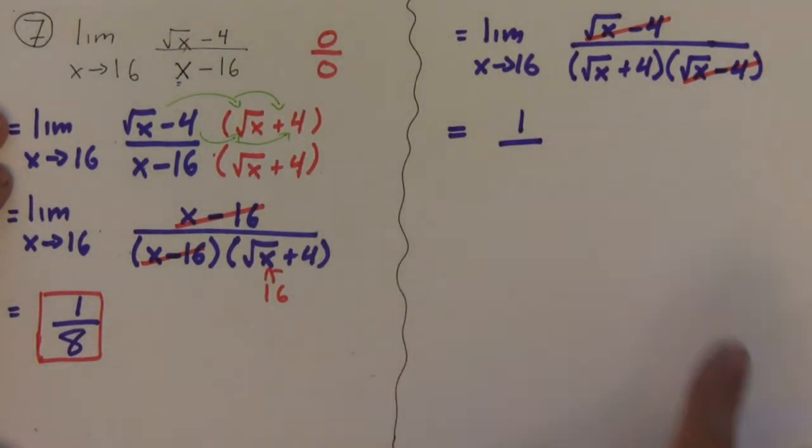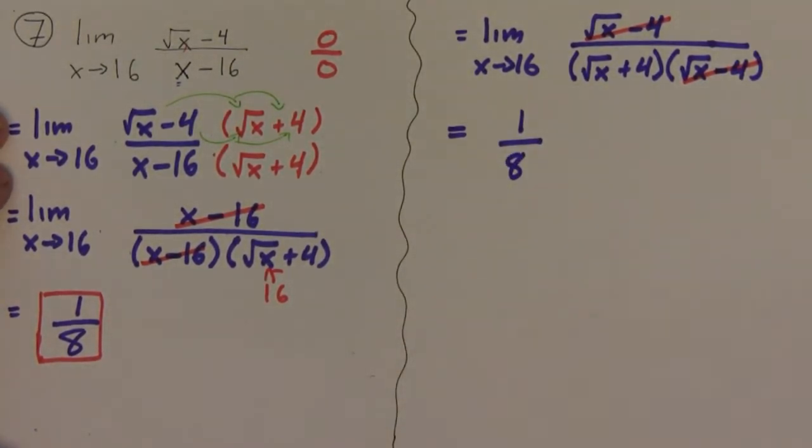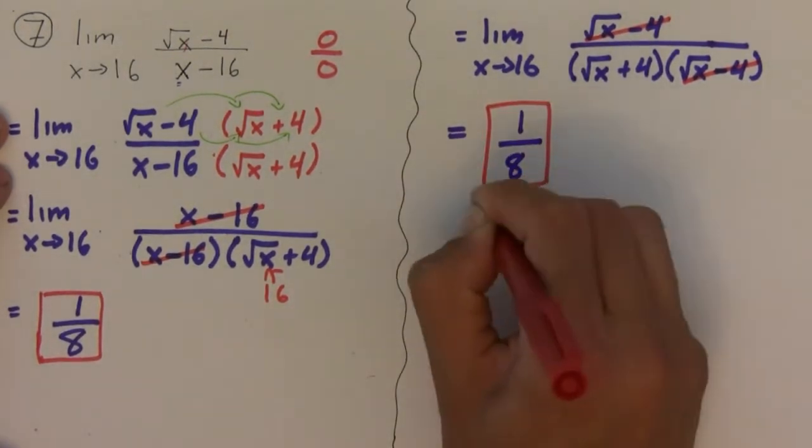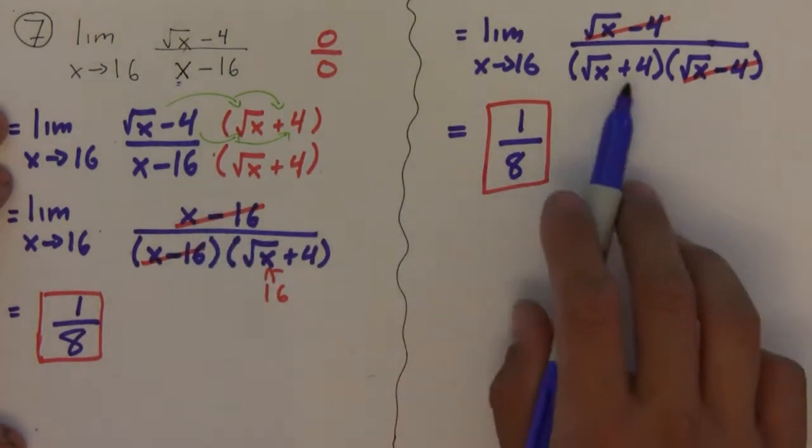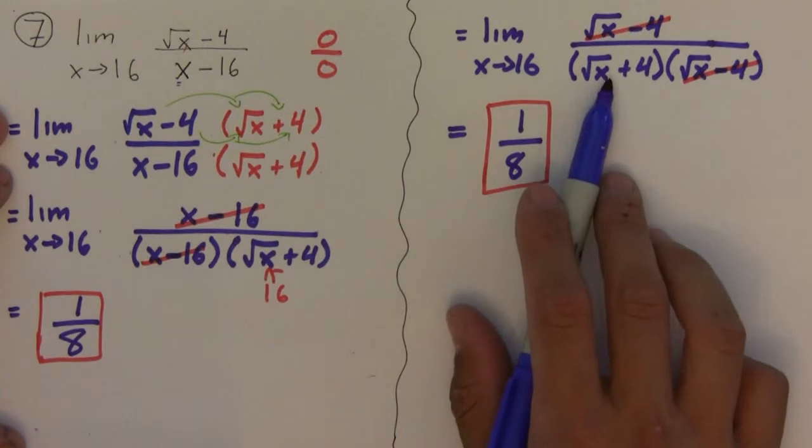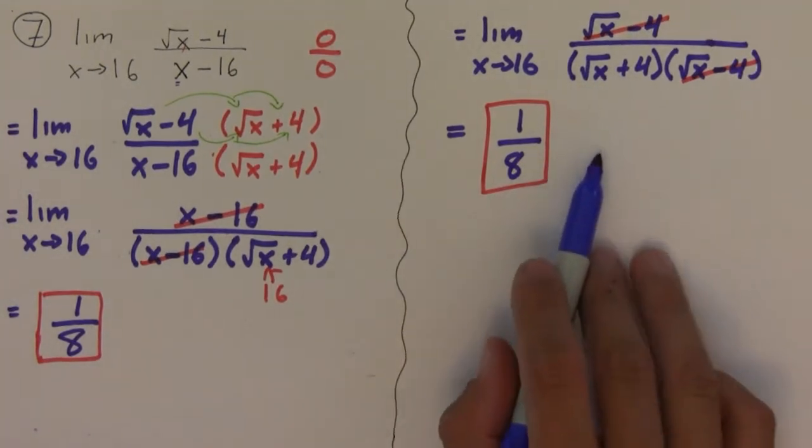And what you get is exactly the same thing that we got back here. If you plug in now 16 down here, you get 1 over 8. And so it's really your choice. I personally prefer this method because I think it's clear, although if you're quick and you recognize it as being this type and that this would work, then this is a little bit faster.